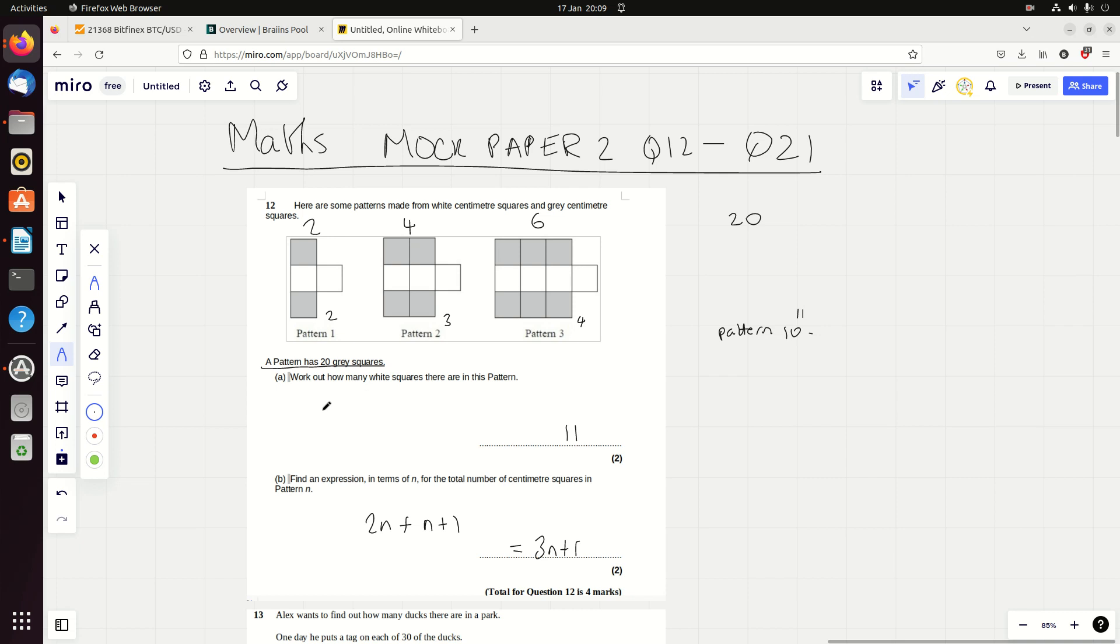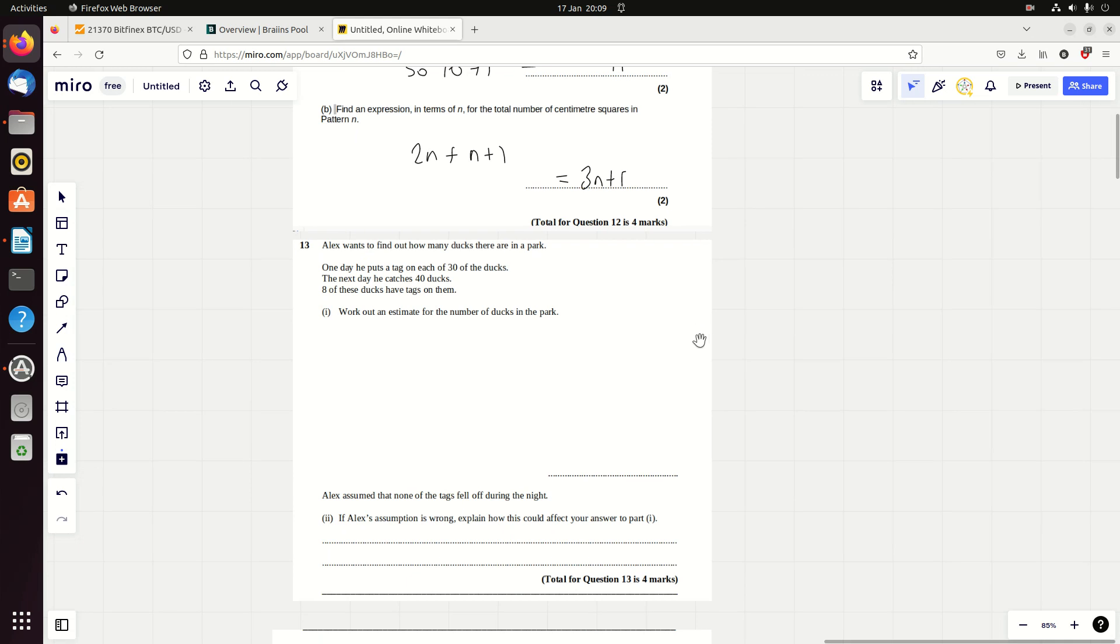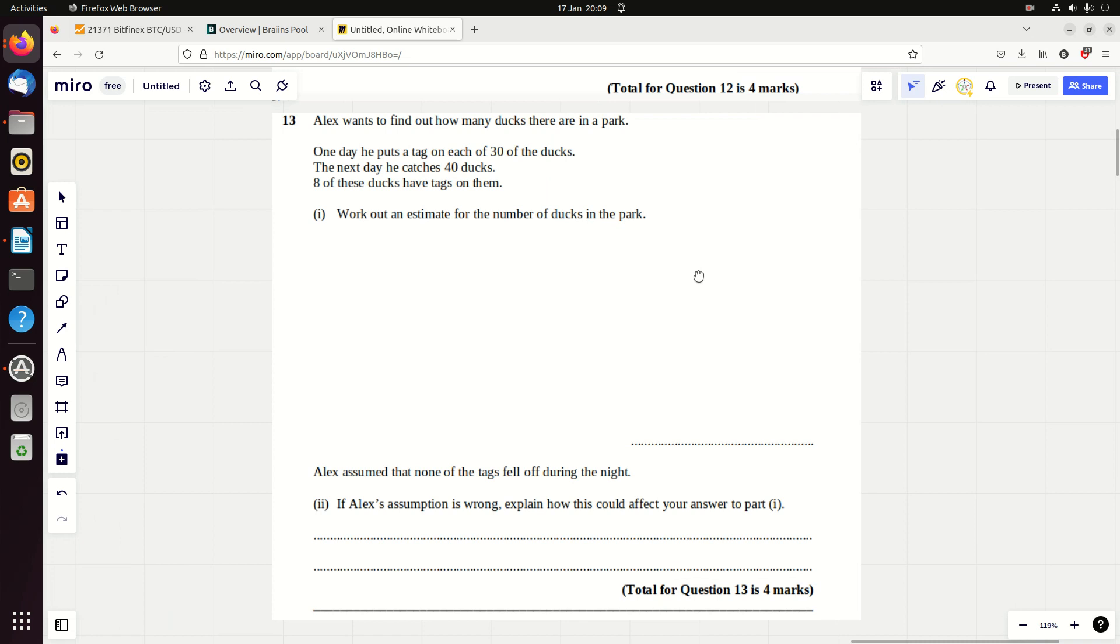Find an expression in terms of n for the total number of centimeter squares in pattern n. We're going to have to do 2n to get the number of grey squares because grey is always double the pattern number. Then we're going to add the white squares, which is n plus 1. So that's 2n plus n plus 1, which is 3n plus 1. One thing which freaks me out on these questions is how many marks it's worth. If you just put down 11, maybe you're going to miss the method mark. Try and make it clear. If it shows two marks, do two lines of working. Three marks, three lines of working.